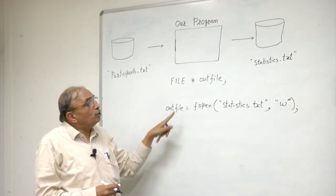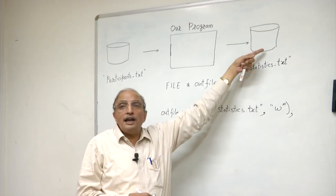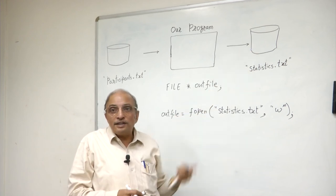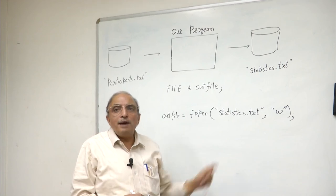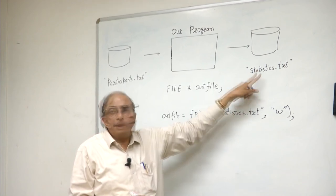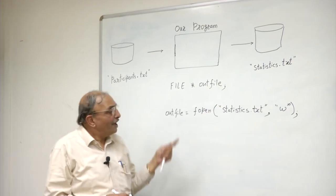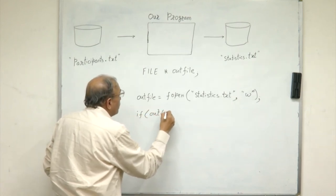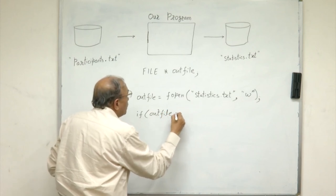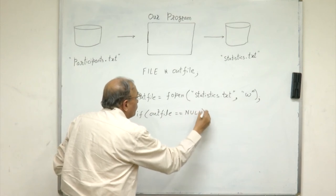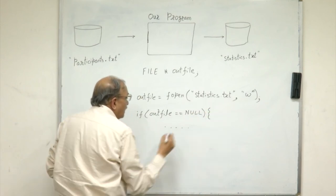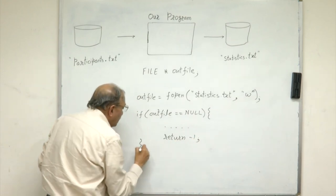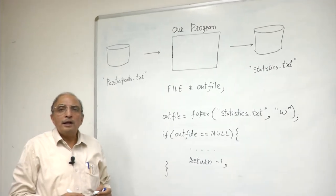But it is possible, for example, that you do not have permission to open such a file in the subdirectory in which your current execution is going on, or there may be no space on the disk. For any reason, if the operating system is not able to open this file, that means it is not able to create this file, it will return again a null pointer which you can check. So once again, you can have statements like if outfile equals null, then you can create an output message and you can say return -1, for example, to indicate that the operation of opening an outfile has not succeeded.